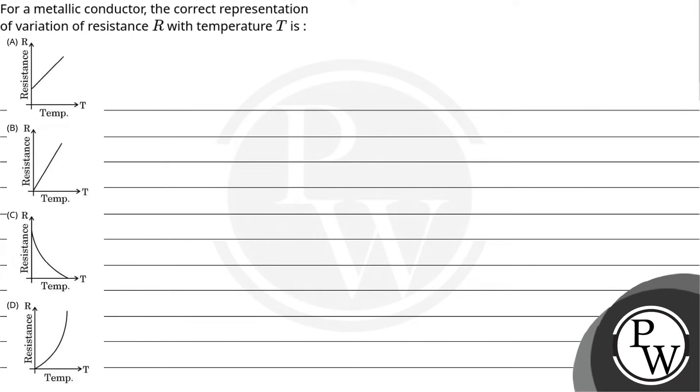Hello guys, let's read the question. For a metallic conductor, the correct representation of the variation of resistance R with temperature T is - so basically what we will tell in graphs is that the correct representation of resistance versus temperature. Let us see the key concept in this question.